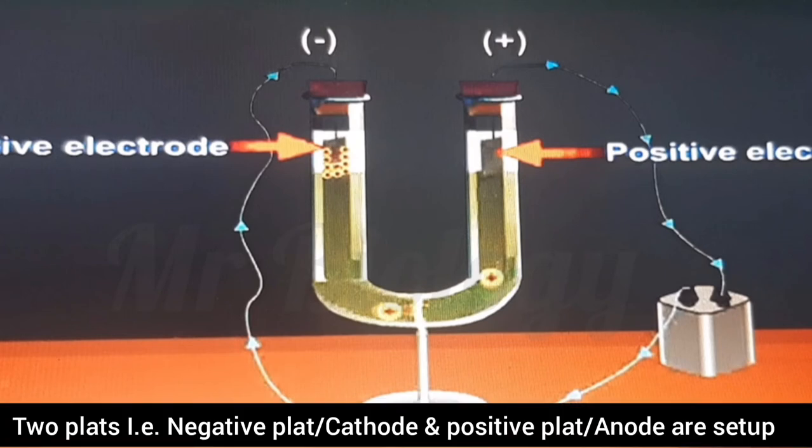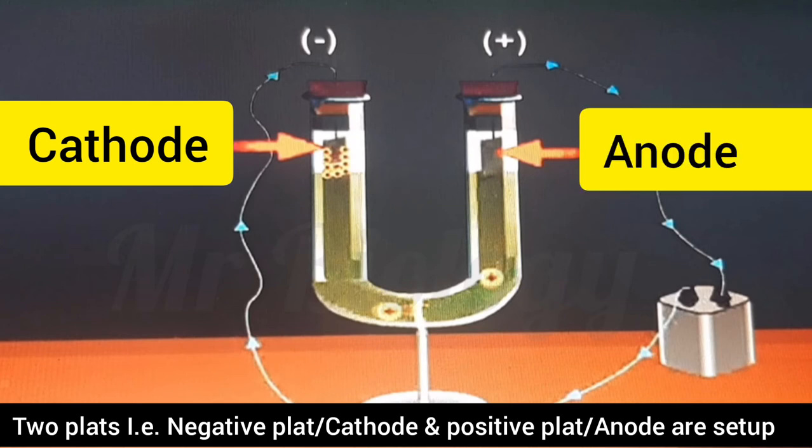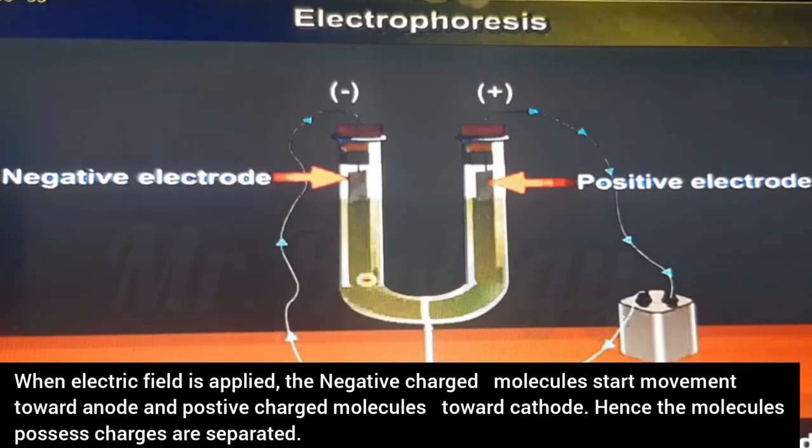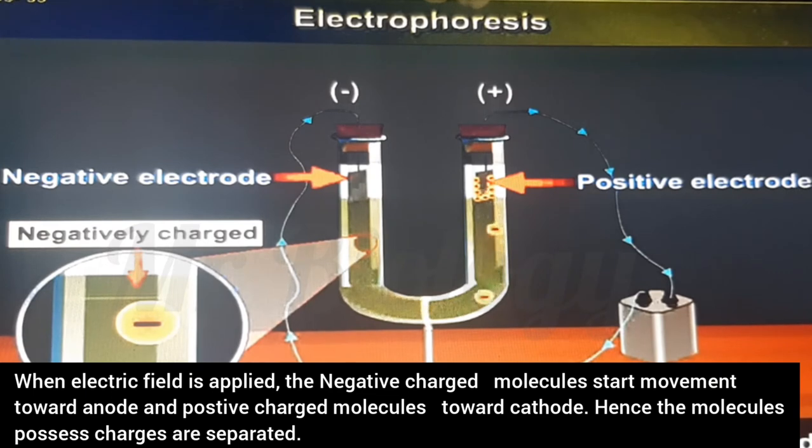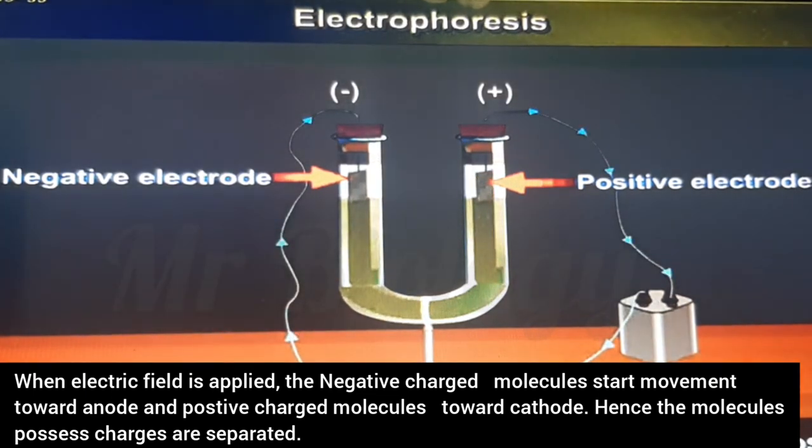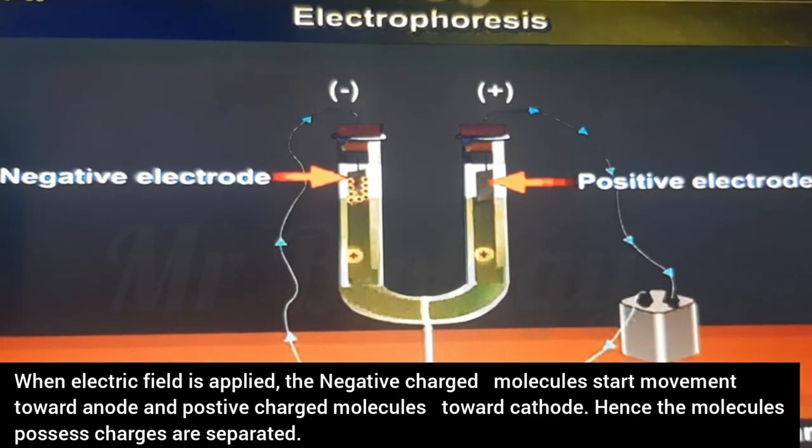Two plates such that negative plate cathode and positive plate anode are set up. When electric field is applied, the negative charged molecules start movement toward anode and positive charged molecules toward cathode. Hence, the molecules possessing charges are separated.